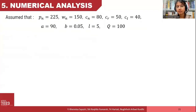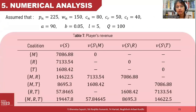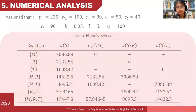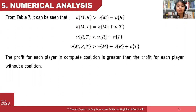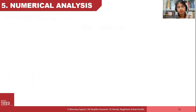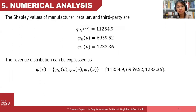We have already decided our parameter values. Shown on screen is the players' revenue. From Table 7, we find that the profit for each player in the complete coalition is greater than the profit for each player without a coalition. The revenue distribution is shown on screen.